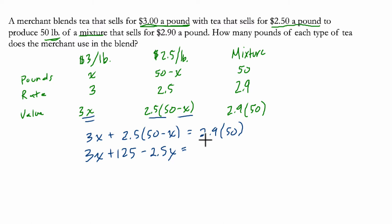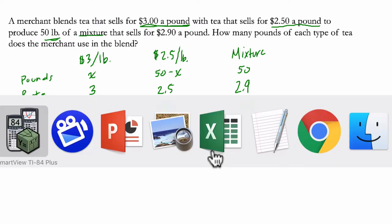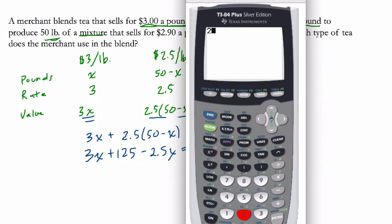Well, 2.9 is 1 tenth less than 3, so 3 times 50 would be 150 minus 1 tenth of 50, which is 5. So I think that's 145, but like I said, I actually am feeling tired, so I'm going to make sure I have that correct. 2.9 times 50, 145. Yay.